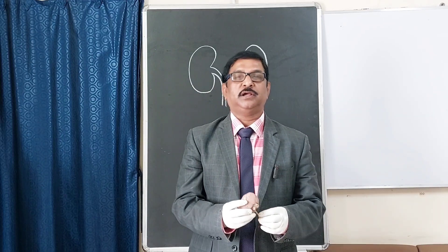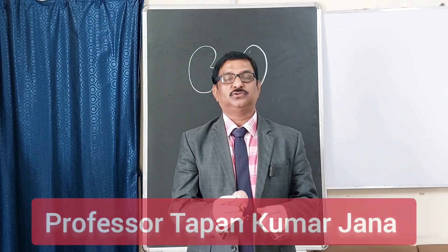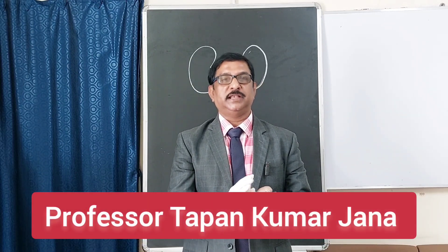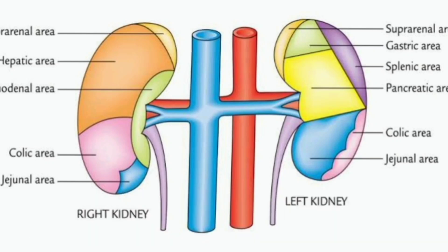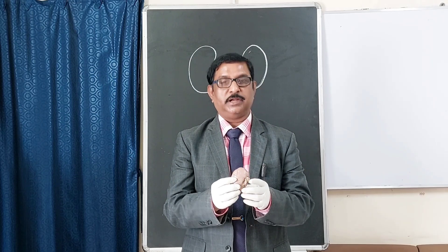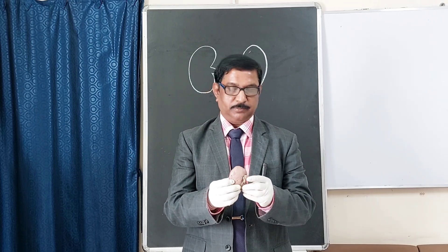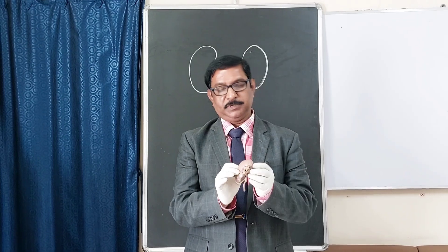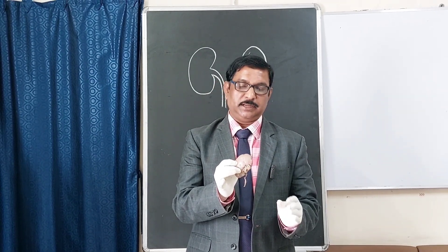Good morning students. Today I will show you the different relations on the anterior surface and posterior surface of the right kidney and left kidney. In the previous video I have shown you how to hold the kidney in endobicular position and what the different surfaces, borders, poles, and the hilum are. Today I will show you the different relations. Before that I am going to just once again repeat the endobicular position of the kidney.